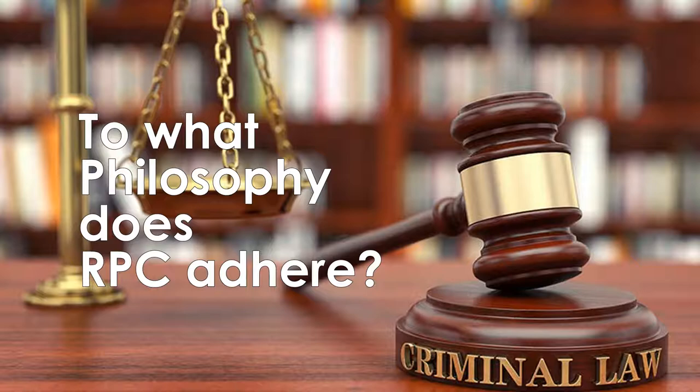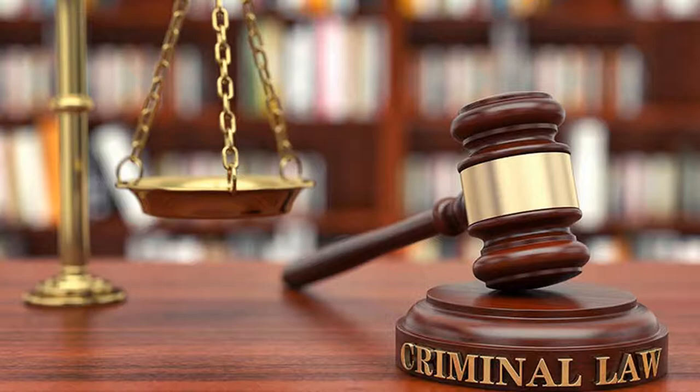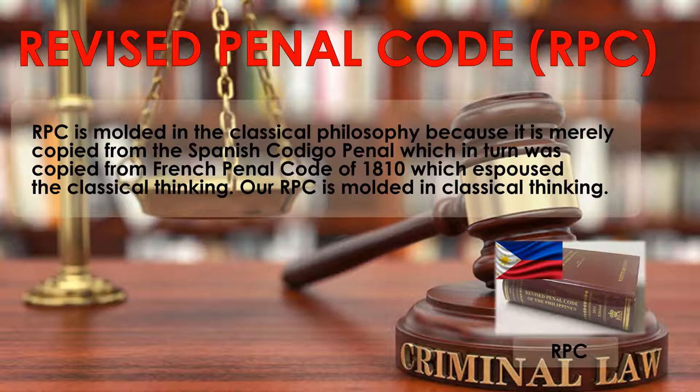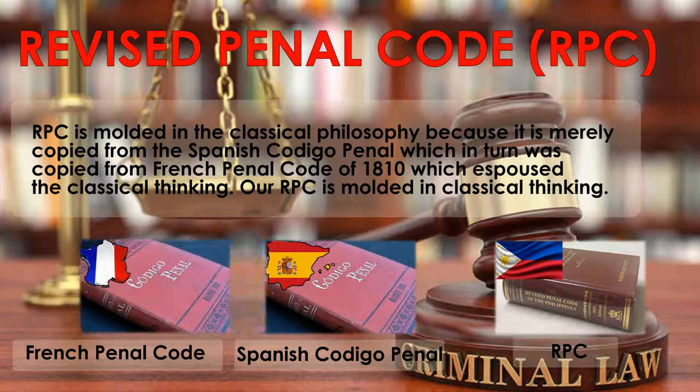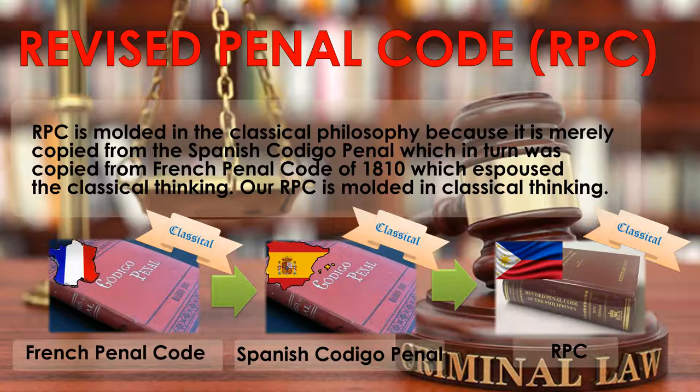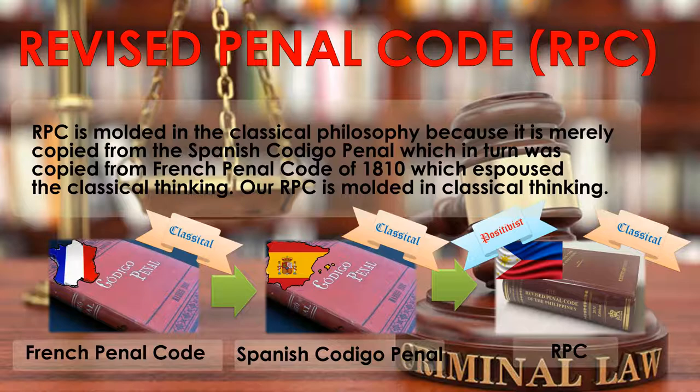So, to what philosophy does the RPC adhere? The RPC is molded in classical philosophy because it was copied from the Spanish Código Penal, which in turn was copied from the French Penal Code of 1810, which espoused classical thinking. Note that although the RPC is molded in classical thinking, the amendments are geared toward the positivist philosophy, such as the Probation Law, the Indeterminate Sentence Law, and RA 9346.